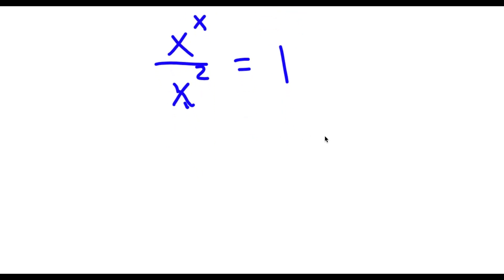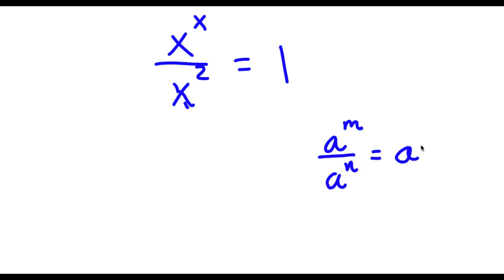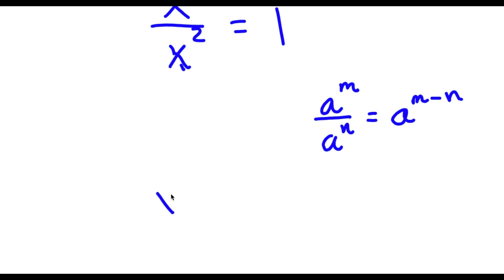Now if I have something in the form a to the power of m over a to the power of n, this is equal to a to the power of m minus n. So in this case, x to the power of x over x to the power of 2 equals x to the power of x minus 2, which is equal to 1.